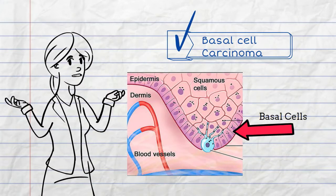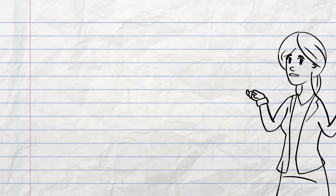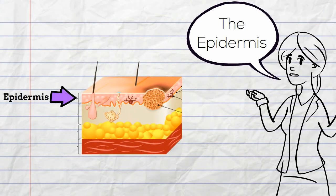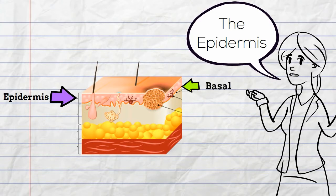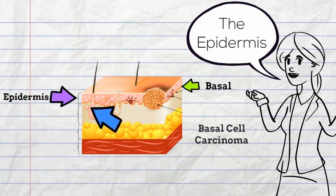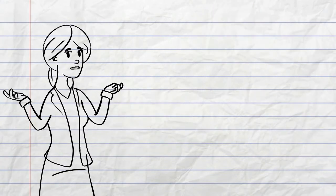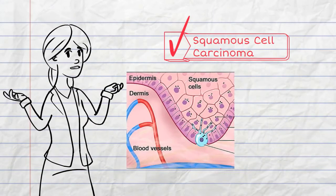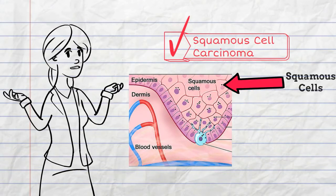What's the epidermis? Well, the epidermis is the top layer of the skin and is composed of many layers of cells. Basal cells can be found on the innermost layer of the epidermis. The second type of skin cancer is squamous cell carcinoma, resulting from cancer of the squamous cells, which are located above the basal cell layer.